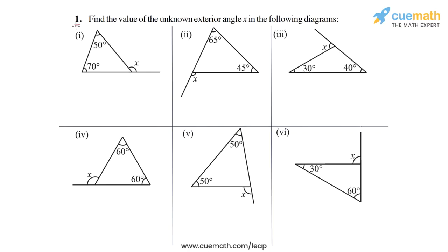In question one of this exercise we have to find the value of the unknown exterior angle x in each of the following diagrams. To solve this question we will use the exterior angle property of triangles, which says that any exterior angle of a triangle is equal to the sum of the opposite interior angles. So let's start with part one.